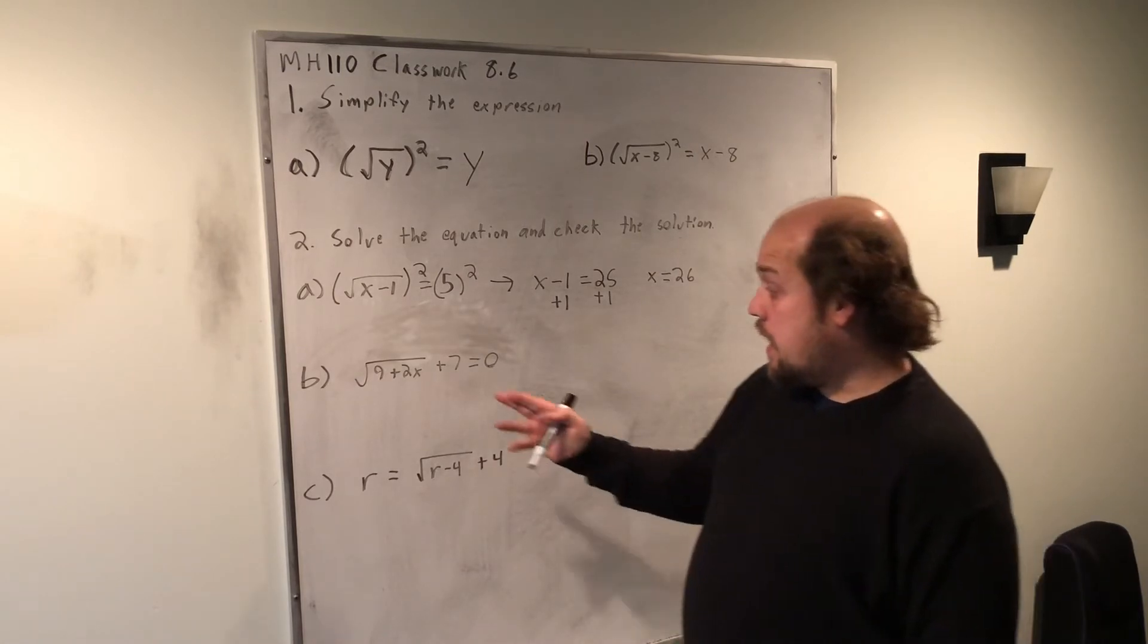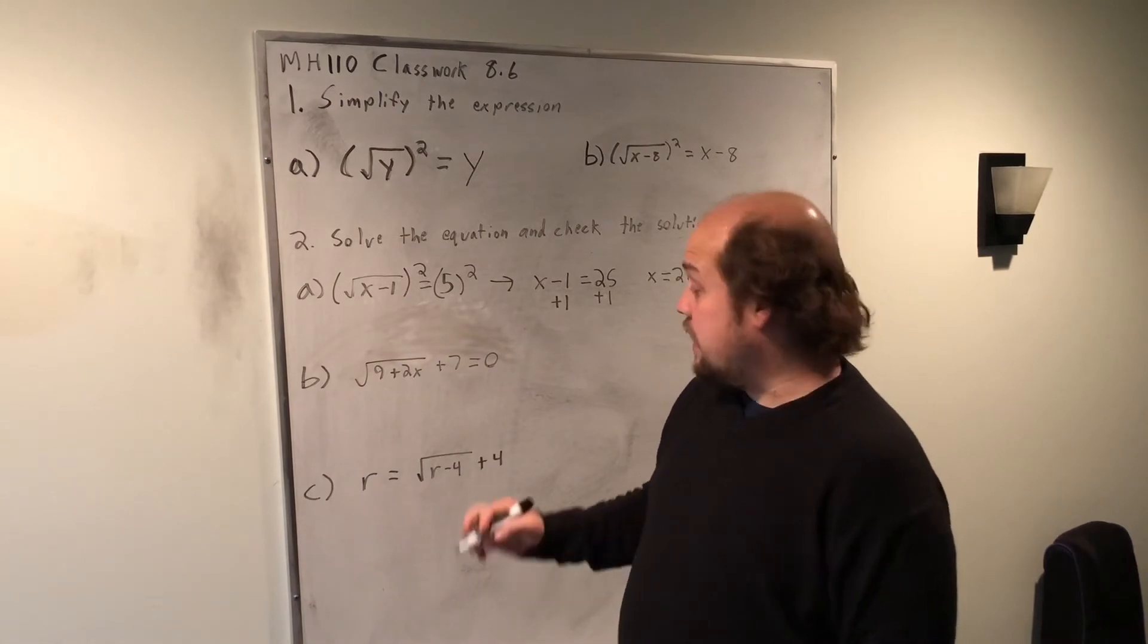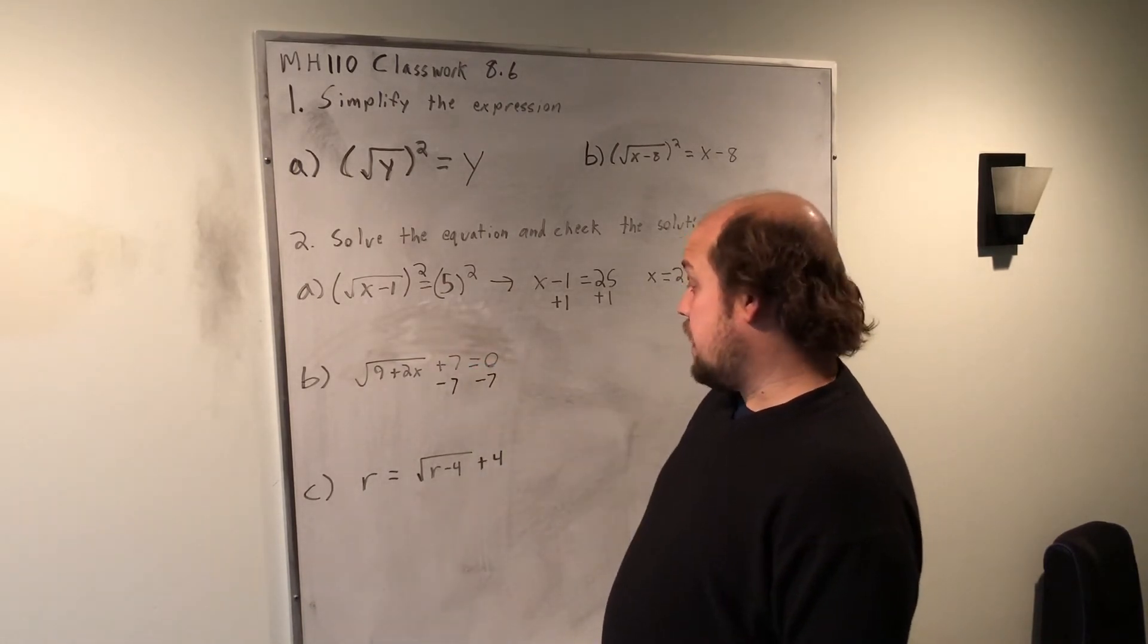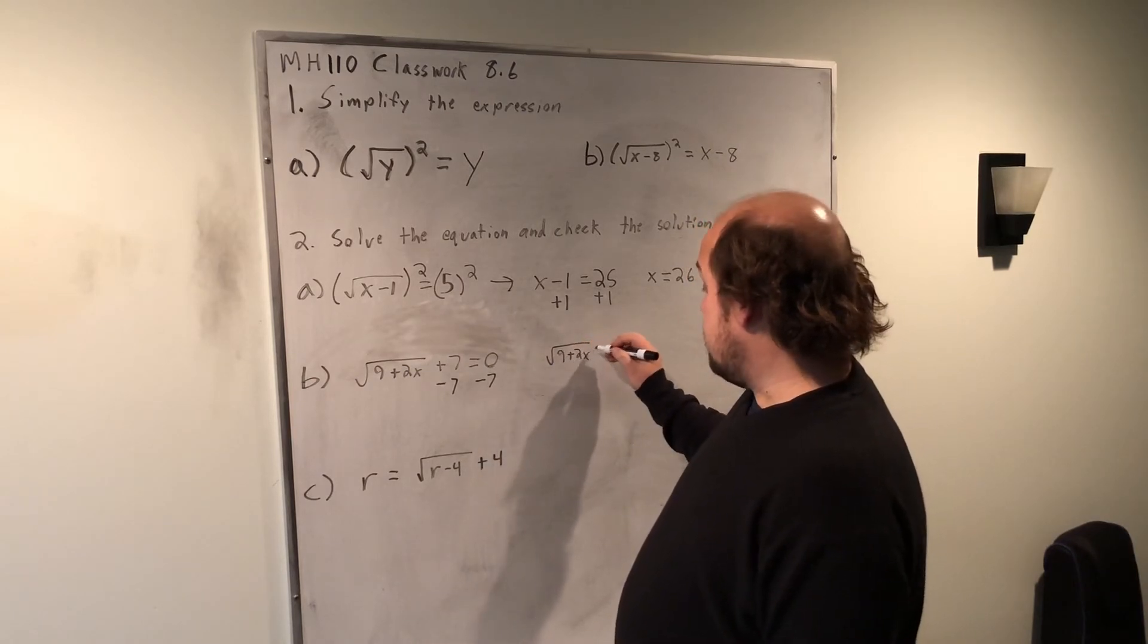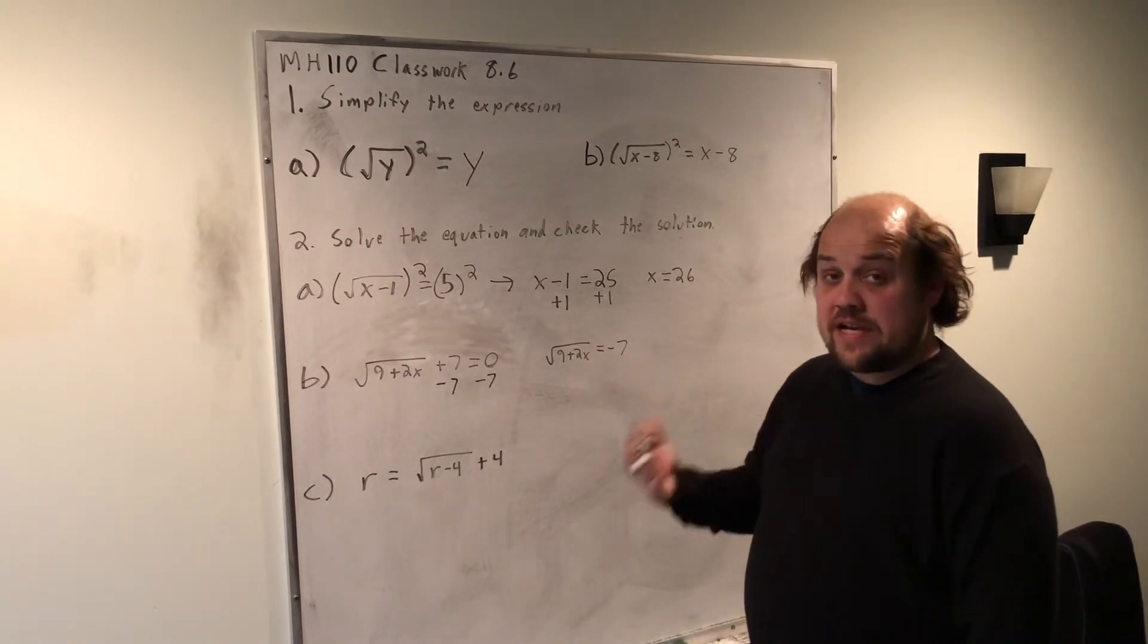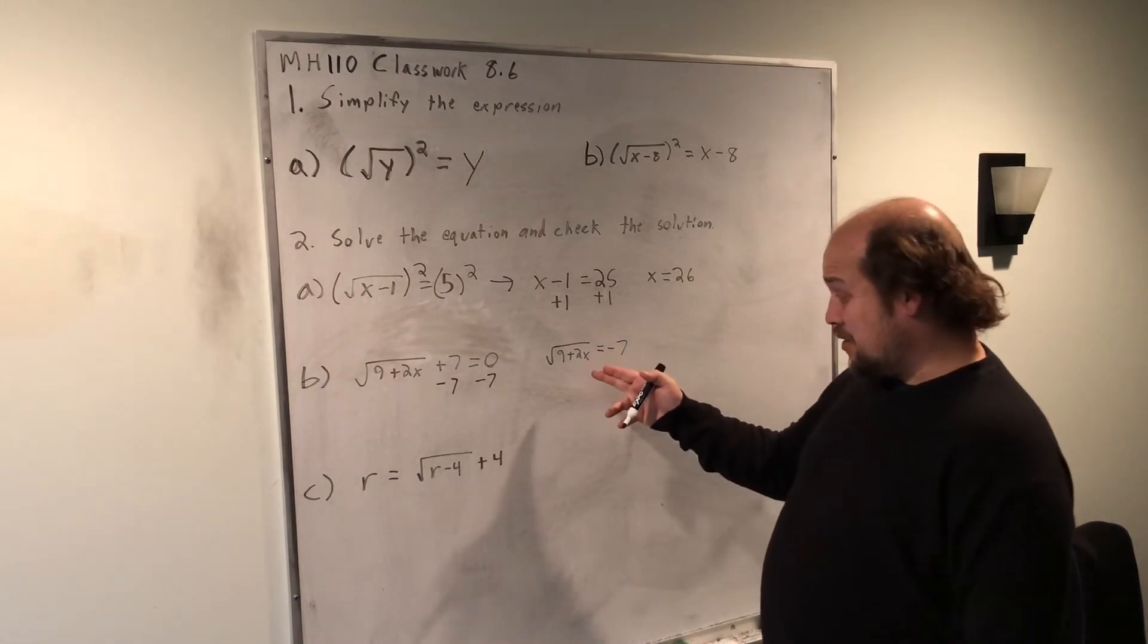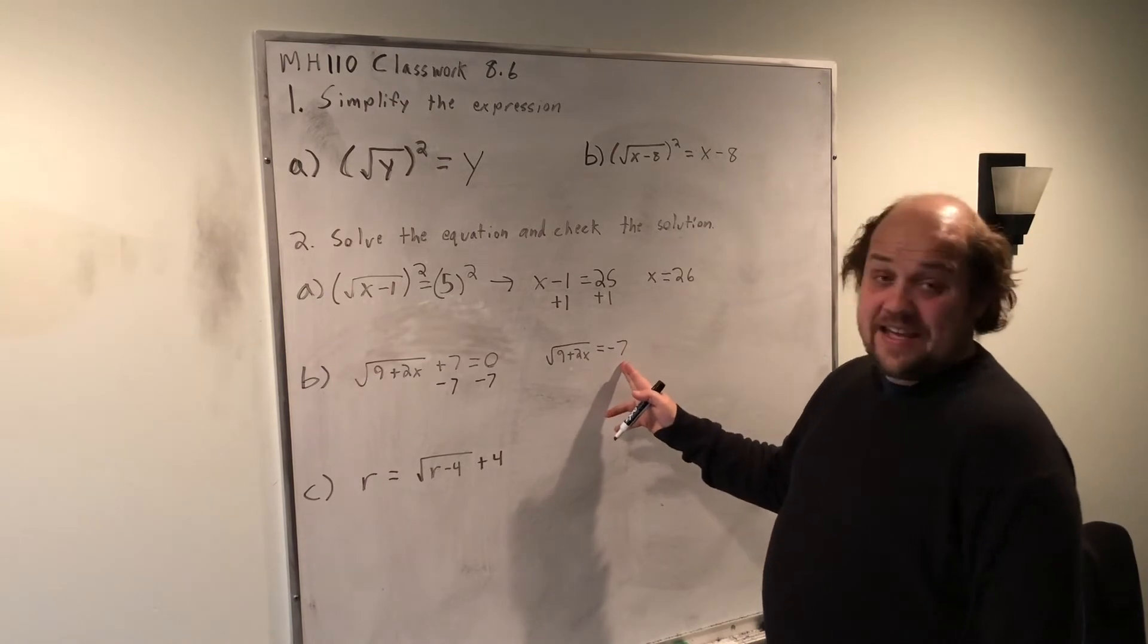In b, I currently have the root with something else on the same side, so I need to move that positive 7 by subtracting 7 from each side. That gives me the root of 9 plus 2x equals negative 7. I could start squaring both sides to try and solve for x, but hopefully I recognize, well wait, this is a situation where I have a root equal to a negative answer.